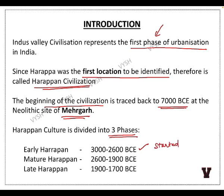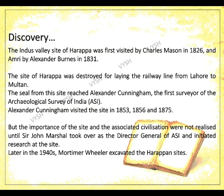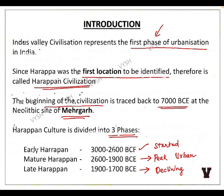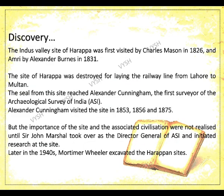The early Harappan phase was between 3000 to 2600 BCE. The mature Harappan phase was 2600 to 1900 BCE. The late Harappan phase was from 1900 BCE onwards. The Indus Valley Civilization site of Harappa was first visited by Charles Masson in 1826, and Amri by Alexander Burnes in 1831.